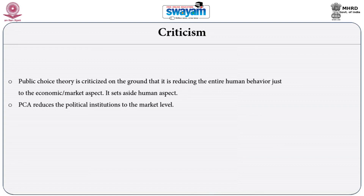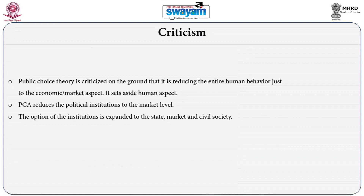A second criticism is that it also reduces political and state institutions to the market level, understanding them purely from a market point of view. Therefore, recent theoreticians such as Vincent Ostrom and Elinor Ostrom have argued that the public choice approach need not be restricted to understanding state institutions from the market point of view. They expanded the horizon to include another institution — civil society — so the institutional options now encompass state, market, and civil society.